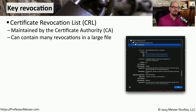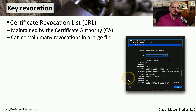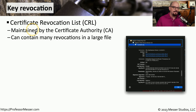There may be times when we're decommissioning a web server and we would like that certificate to no longer be valid. Or maybe we're concerned that an attacker has gained access to our certificates, so we would like to revoke all of those certificates and create new ones. One of the ways we can provide this revocation is through the use of a CRL, or certificate revocation list. This is a list of all of the certs that have been revoked, and we keep this list on the certificate authority itself.